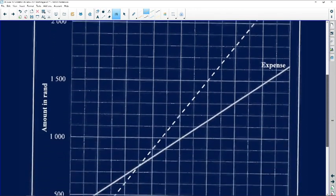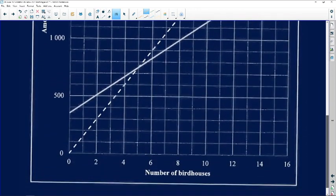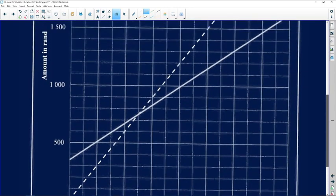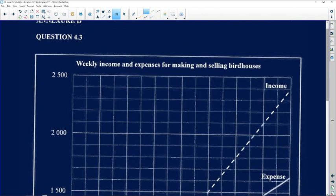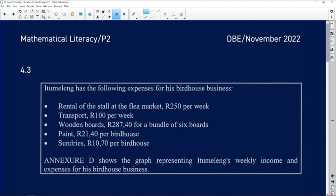You see income, expense, number of birdhouses, amount in rands. So I've got my title, my y-axis, my x-axis. I've got income and expenditure. So we now can see.